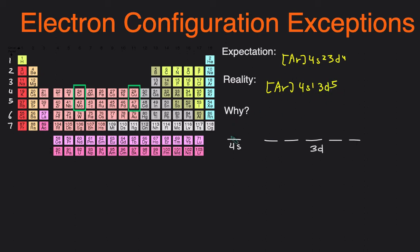And the reason for that is, let's draw out the expected one. So 4s2, 3d4. The reason why it's 4s1, 3d5 is we take one of the 4s electrons and then bump it up to the 3d.